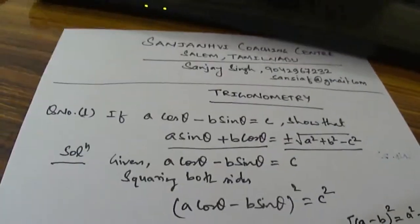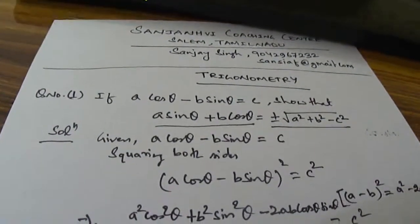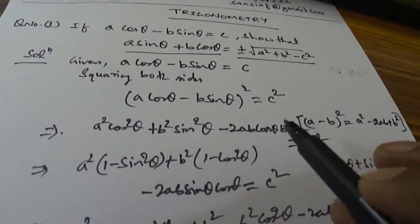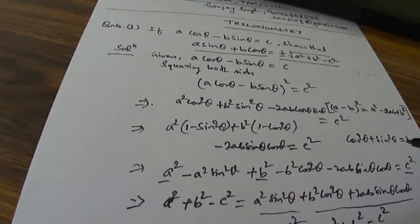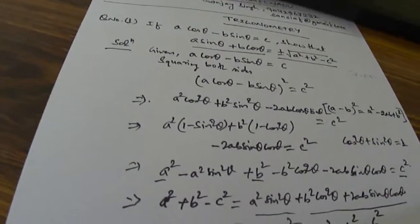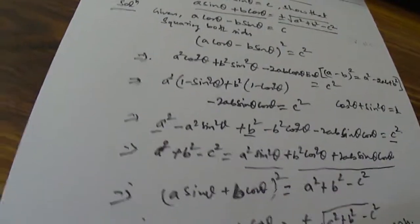From the top you can have a glance at how we have solved. We went for squaring A cos θ minus B sin θ, applied the A minus B whole square identity, and then substituted the identity sin squared θ plus cos squared θ equals 1. After putting it in, we got the equation from which we could easily get our solution in the last step.